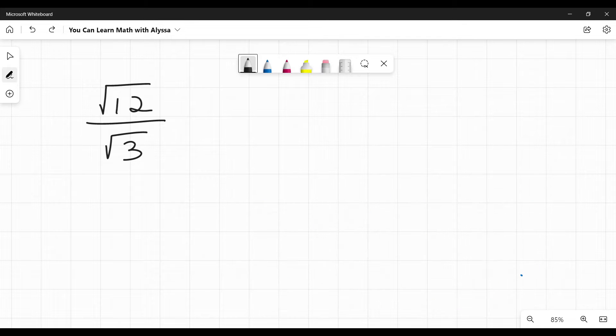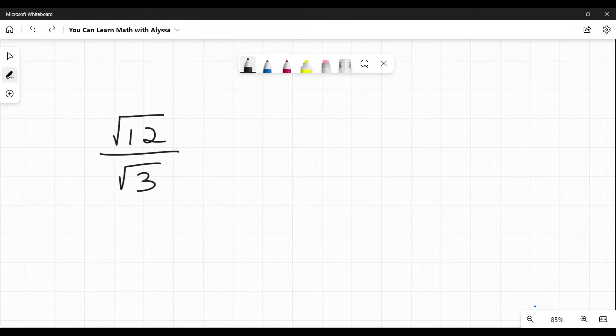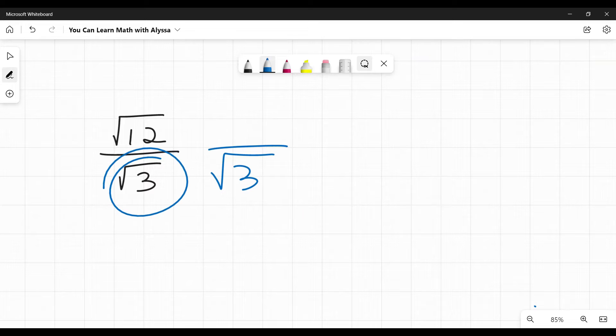Here's how we get rid of that radical. This is all going to be based on the principle that if I have a number over itself, not including zero, any number besides zero over itself, it is equal to one. And if I multiply any number times one, I still get the same number. So we can multiply by a number over itself and I won't change anything. So what I'm going to multiply by is that bottom radical over itself. So the square root of three over the square root of three.